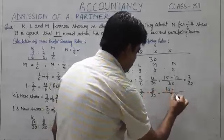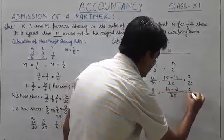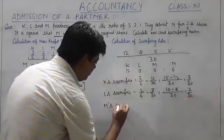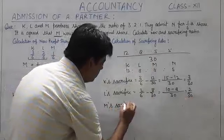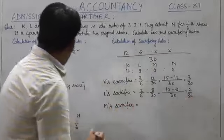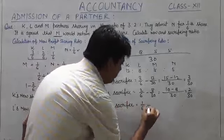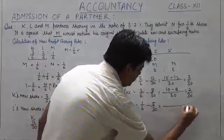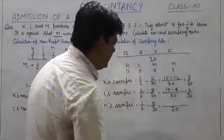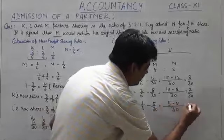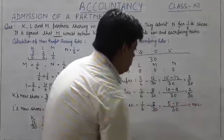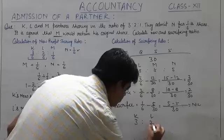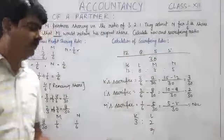M's old is 1/6 minus new is 5/30. Once again we will take it as same, that will become 30. 6 fives are 5 minus 5, that will become 0. So sacrificing share of K and L will be 3:2. So like this we will solve such type of questions.